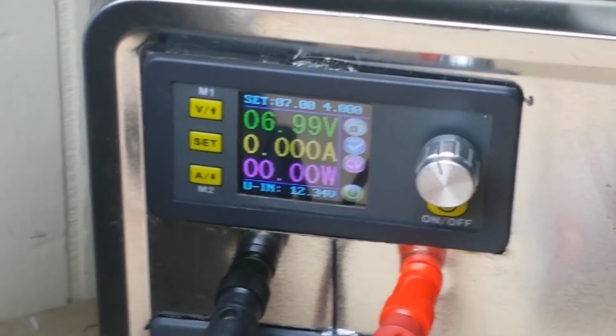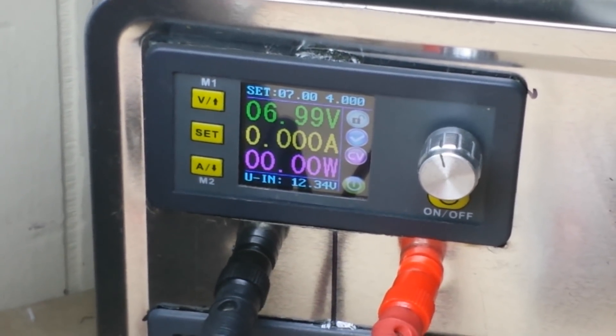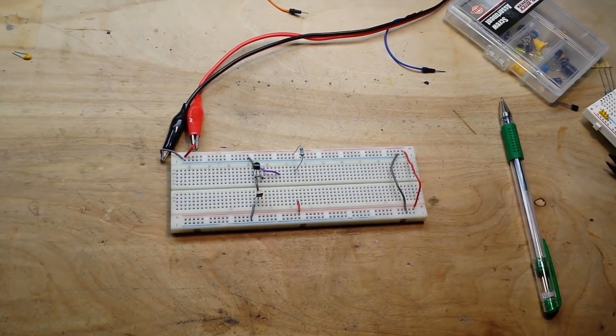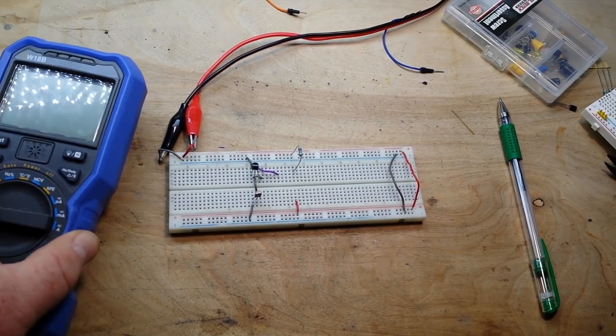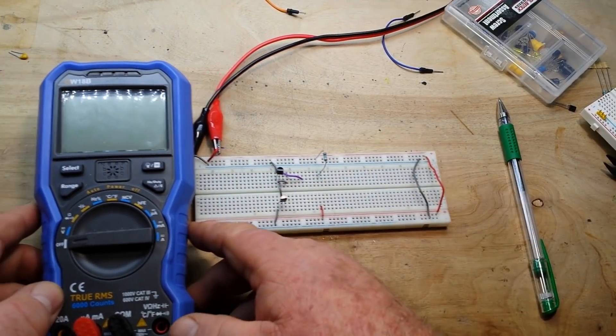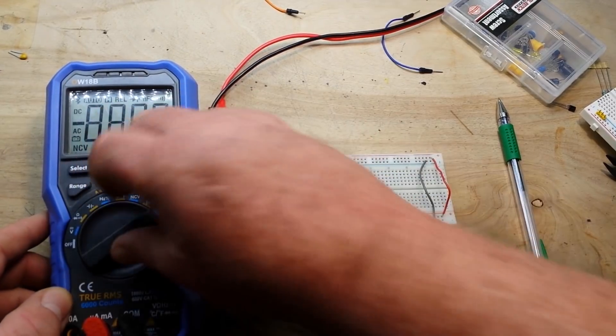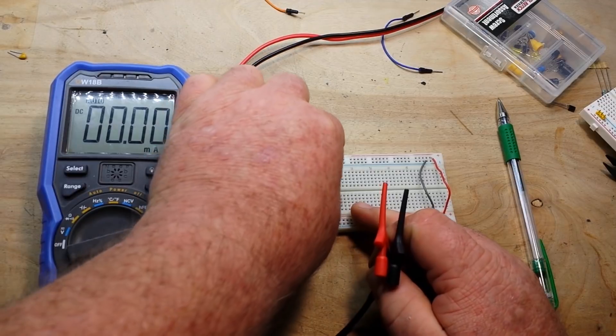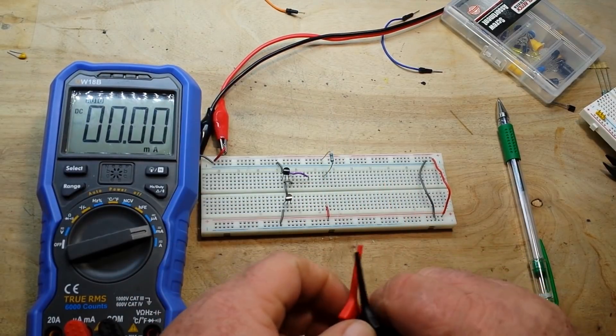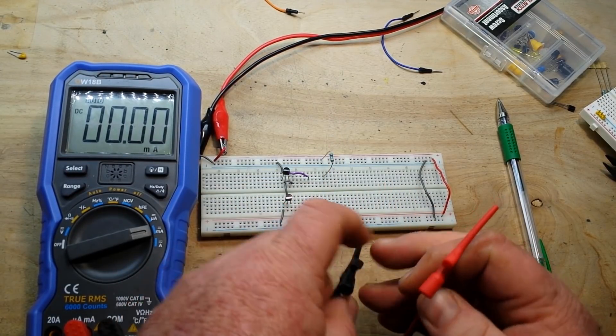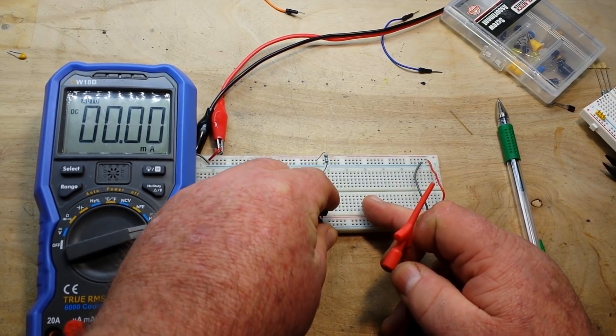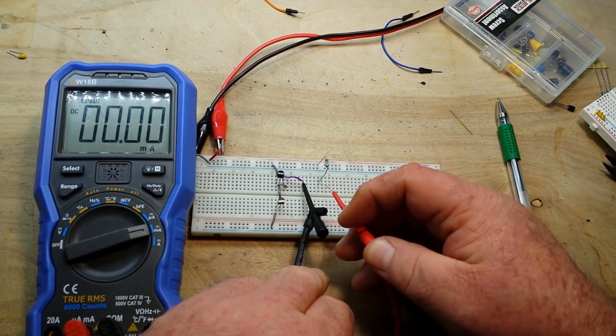There is our power supply giving it 7 volts and you can see right now there is no current flowing and that is because it is not hooked up at the collector. So we will bring in a meter and we will set it to milliamps and we will hook it up here. This is a 1K resistor by the way.